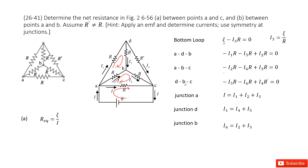Then we look at loop DBC. The current goes through resistor R — voltage decreases — goes through this R — decreases — and goes through I4. This I4 is in the opposite direction with the loop, so it decreases. So plus I4 times R equals zero.